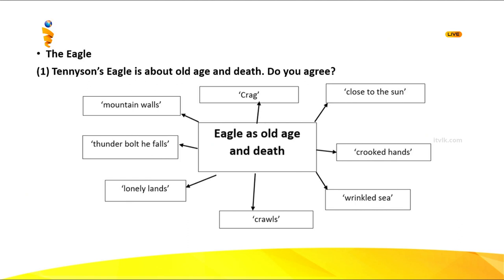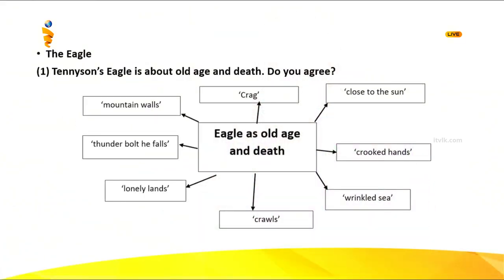Thunderbolt as he falls: this represents the unexpected situation of death — we do not know at what time an elderly person will die. It's like a thunderbolt: no idea when it will happen, a powerful thing, and then they fall and die. Mountain walls: old people are covered inside the house, locked up like prisoners, because if they come out they face a lot of danger. From just a few words in the poem, you can write pages and pages because you have ideas about old people and death.